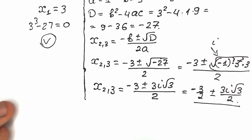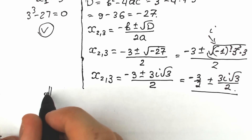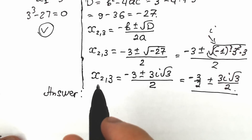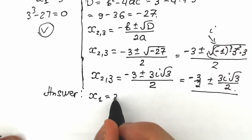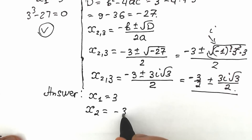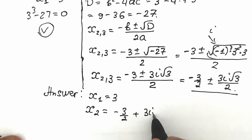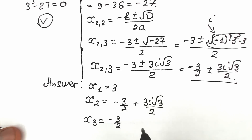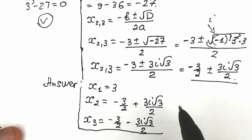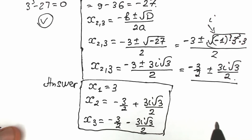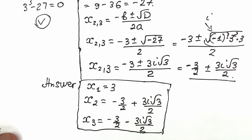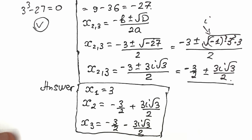Now let's write all our roots in the answer section. x₁ equals 3, x₂ equals minus 3/2 plus (3i√3)/2, and x₃ equals minus 3/2 minus (3i√3)/2. This is the full solution to this challenge. A lot of students say x equals 3 and think that's the full solution, but as you can see, we have two more roots. Don't forget about this — a lot of students forget about the complex roots, and that is a really bad thing in terms of math.